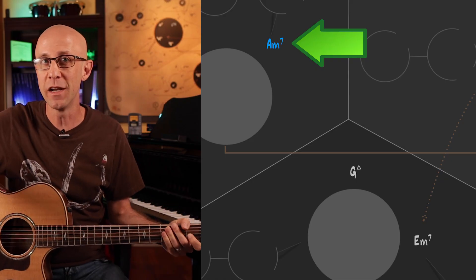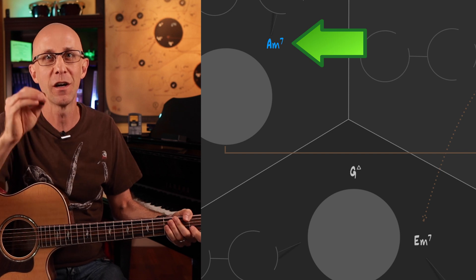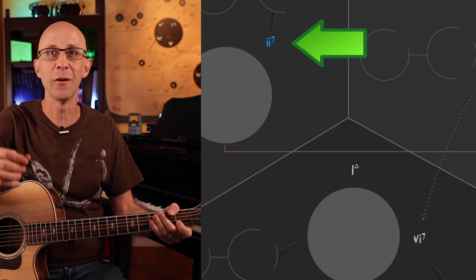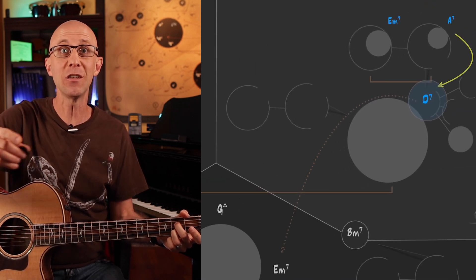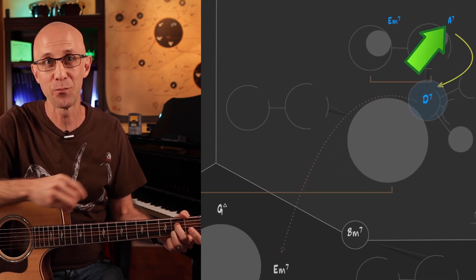Remember, an A chord in the key of G is supposed to be a minor chord, the 2 chord. But here, A is a dominant chord and is being used as a secondary dominant. And moving from the 5 of 5 to the 5 is what we call a half cadence. And here's a bonus for you. If you want to end a phrase on the 5 chord effectively, you can always use this half cadence.